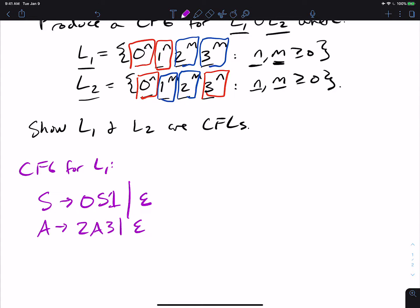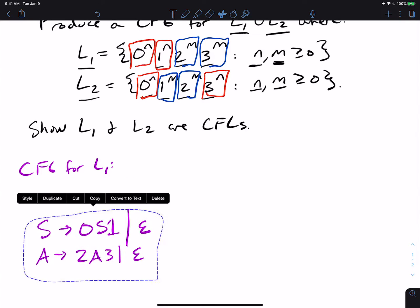And the a variable by itself can make that. If I want the language L1, that's just the concatenation of the two variables. So if I take this, move it down, and add a variable, let's just call it x, which goes to s a, whatever it makes, it must be of the form 0 to the n, 1 to the n, because that's what the s variable makes. And concatenated with that is 2 to the m, 3 to the m, which is what the a variable makes.